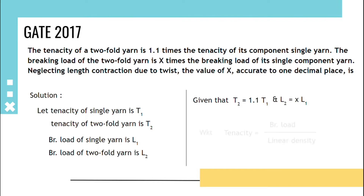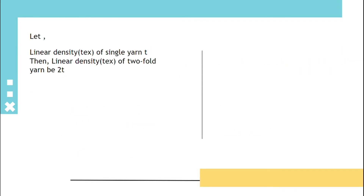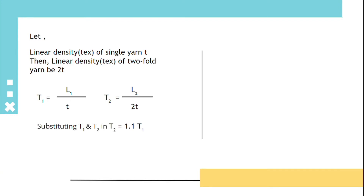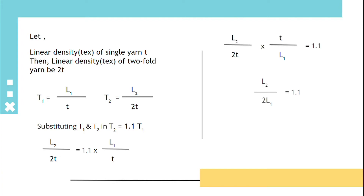Given that T2 = 1.1 × T1 and L2 = x × L1. We know that tenacity equals breaking load upon linear density. Let linear density of a single yarn be T; then linear density of two-fold yarn will be 2T. So T1 = L1/T and T2 = L2/2T. Substituting T1 and T2 into T2 = 1.1 × T1, we get x = 1.1 × 2, so that value will be 2.2.